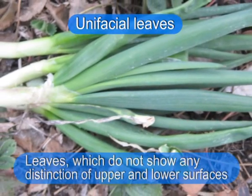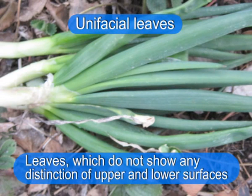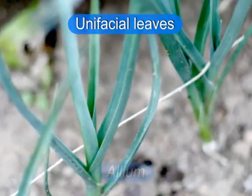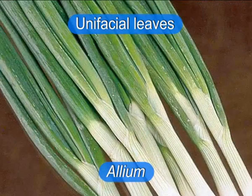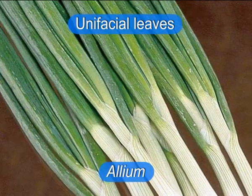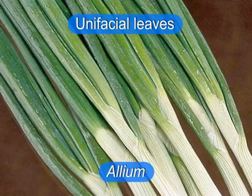The second type of leaves are the unifacial leaves. The leaves which do not show any distinction of upper and lower surfaces are called unifacial leaves. The example of this type are leaves of allium.